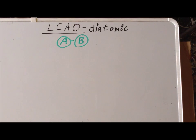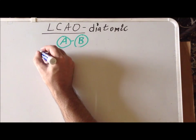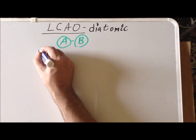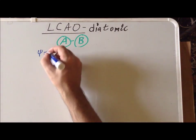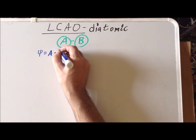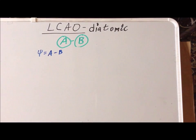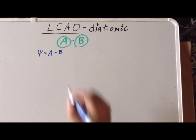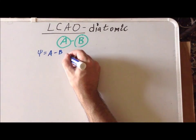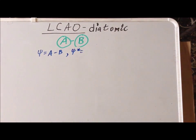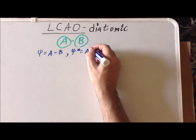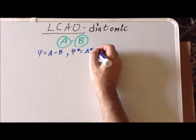If we do that, the resulting unnormalized wave function would be a minus b. If that is so, then the complex conjugate of this particular unnormalized wave function would be a-star minus b-star.